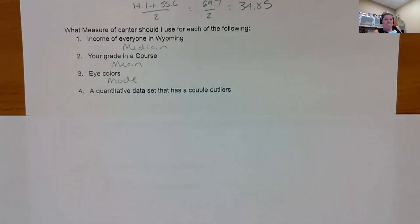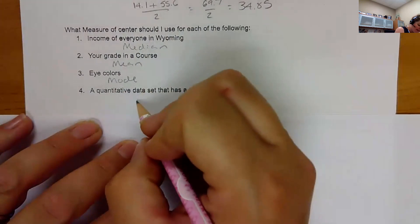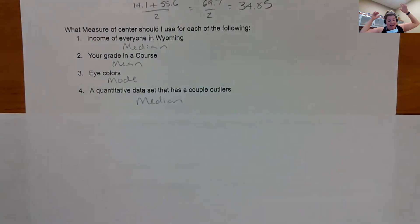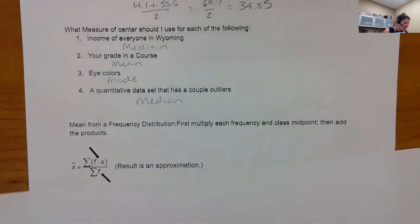What's the best way to find the average eye color, the center of eye color? Mode. The only way. A quantitative data set that has a couple outliers, what's the best way? Not the mean. Not the midrange. This one is median. That's what I really want you to think of. I have a data set and it's quantitative, addable numbers, and it has outliers. Median is the best.